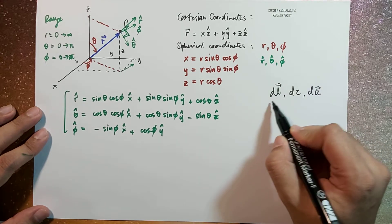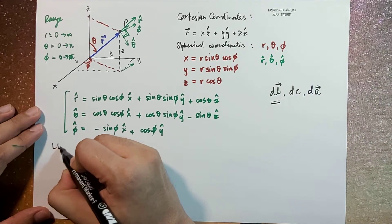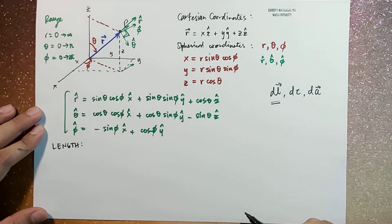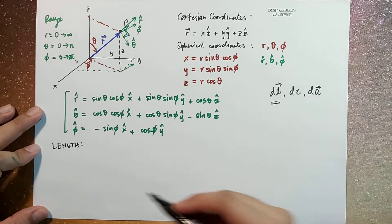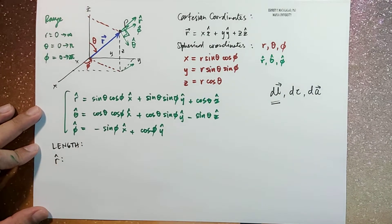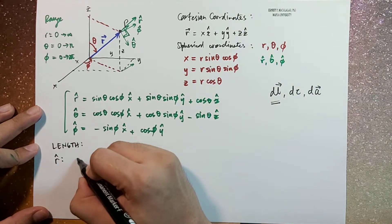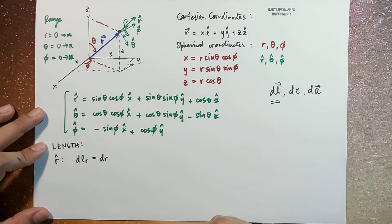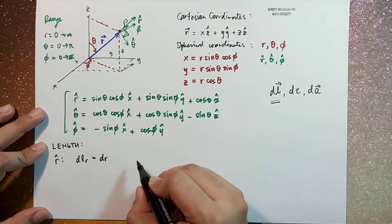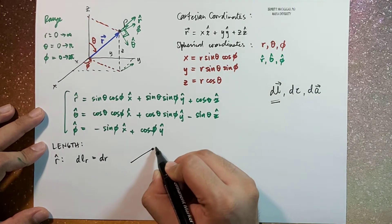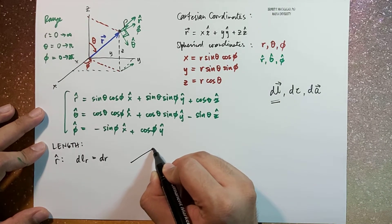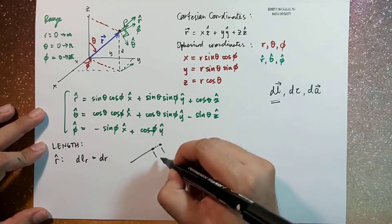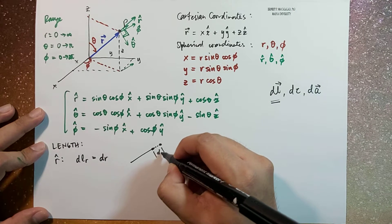Let's start with dl. The unit length can be expressed in terms of its direction. In the r-hat direction, the dl in the r-hat direction is given by dr. So if this is your r, and then this point moves here along the direction of r, this is dr.